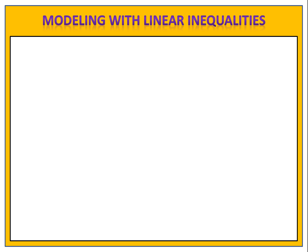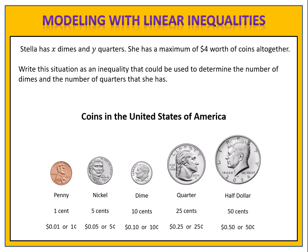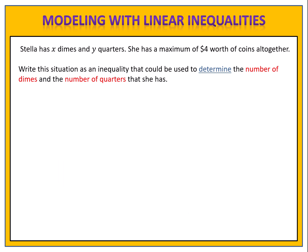In our next examples, we're going to look at problems that involve a total value of something. Our first exercise here will involve the value of money. Stella has X dimes and Y quarters. She has a maximum of $4 worth of coins altogether. Write this situation as an inequality that could be used to determine the number of dimes and the number of quarters that she has. She has dimes worth 10 cents and quarters worth 25 cents. 'Determine' is the key word that helps us define our variables, so X will represent the number of dimes and Y will represent the number of quarters.